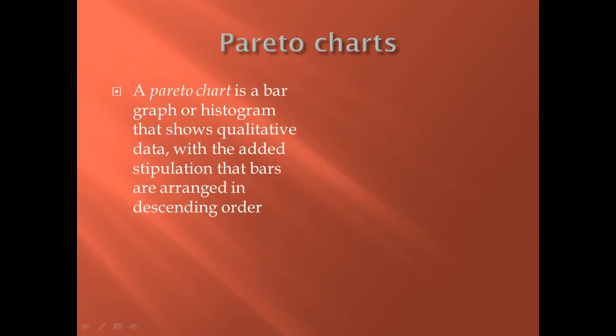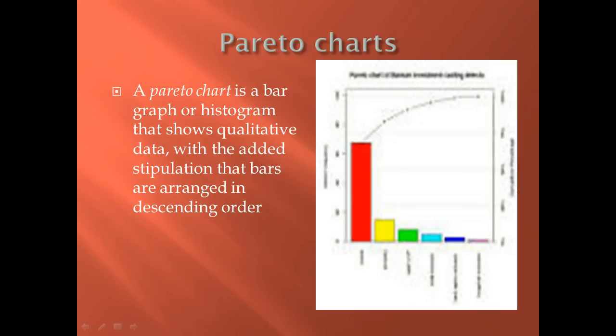A Pareto chart is a bar graph or histogram that shows qualitative data. There is an added stipulation that the bars are always rearranged in descending order. As you can see to the right, we rearrange the bars so the data is always in descending order.